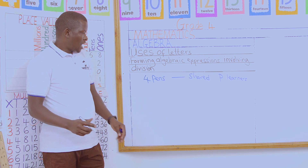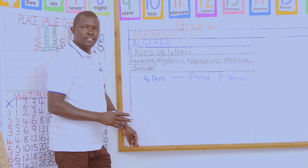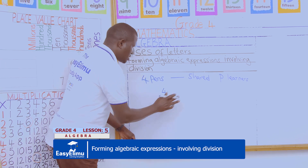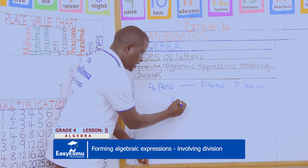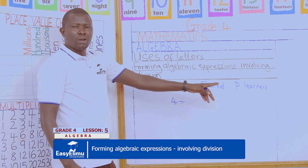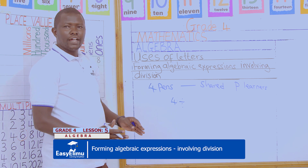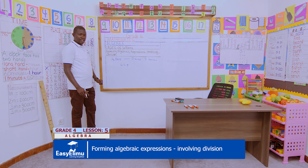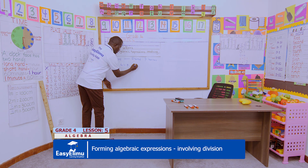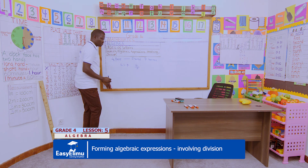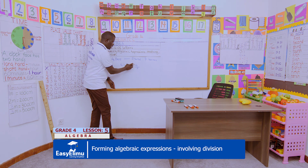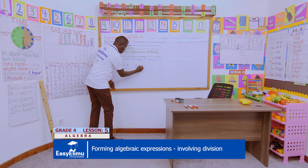Let's solve this together. We want to share, so we divide. We take four pens and divide them by the number of learners, which is p. So each learner gets four divided by p, which we can write as four over p pens.